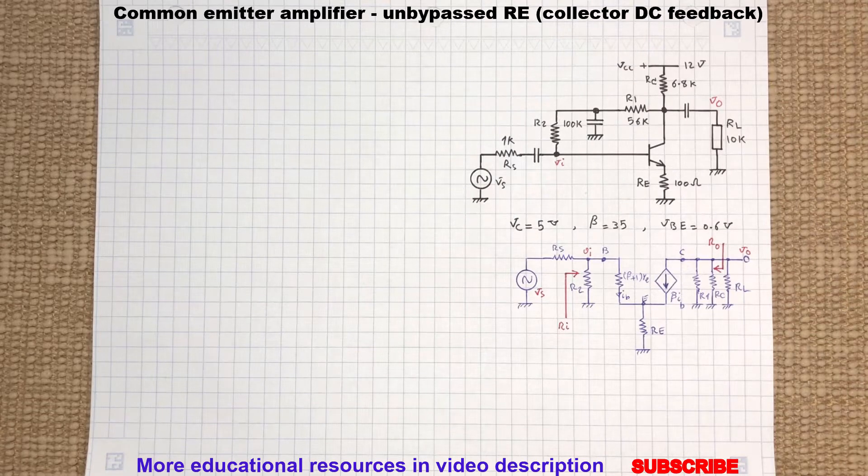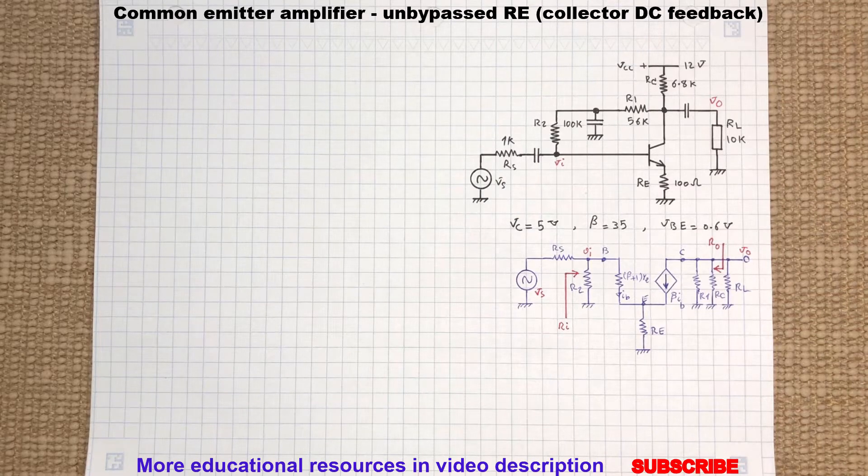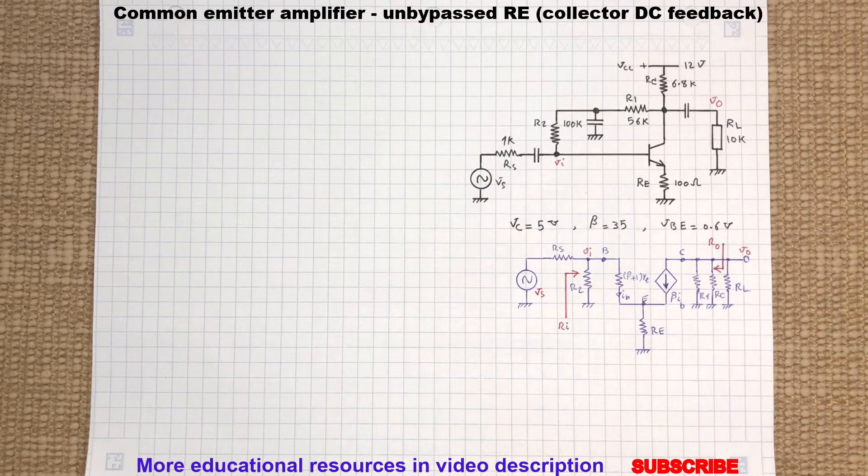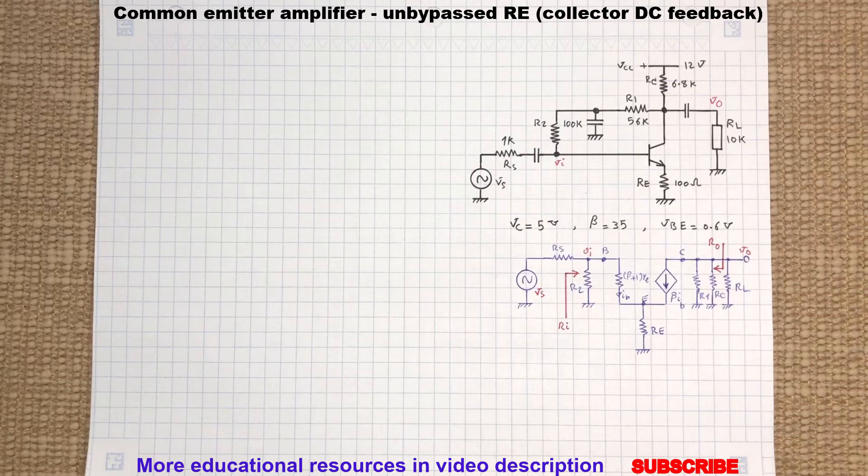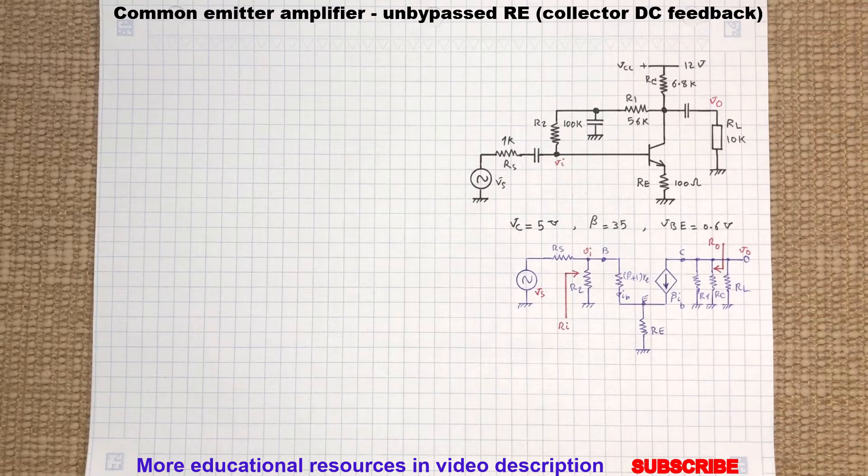This is a common emitter amplifier and today we will perform a small signal or AC model analysis. We will determine the circuit input and output resistance and also calculate the amplifier voltage gain VO to VS.